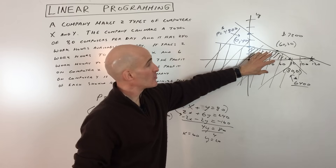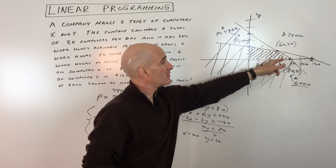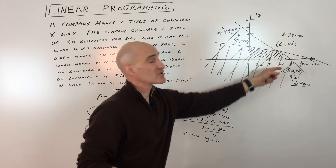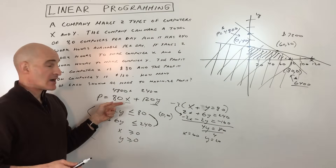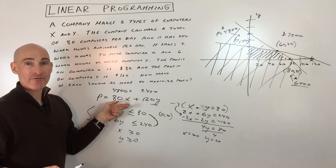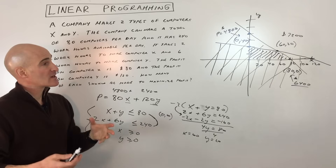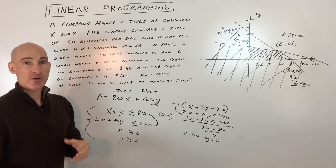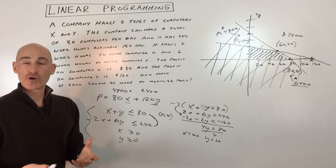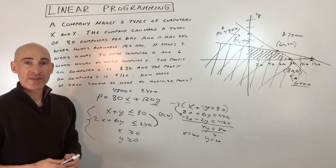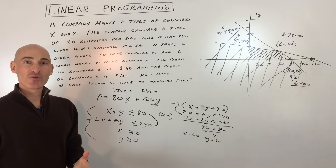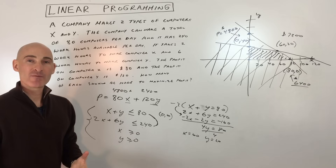Then graph the feasible region, find the overlapping area, and look at the vertices or corners. Test those corner points in your objective function — whichever gives the largest or smallest value, depending on whether you're maximizing or minimizing, is your solution. I hope this helped you understand how to work with linear programming problems.